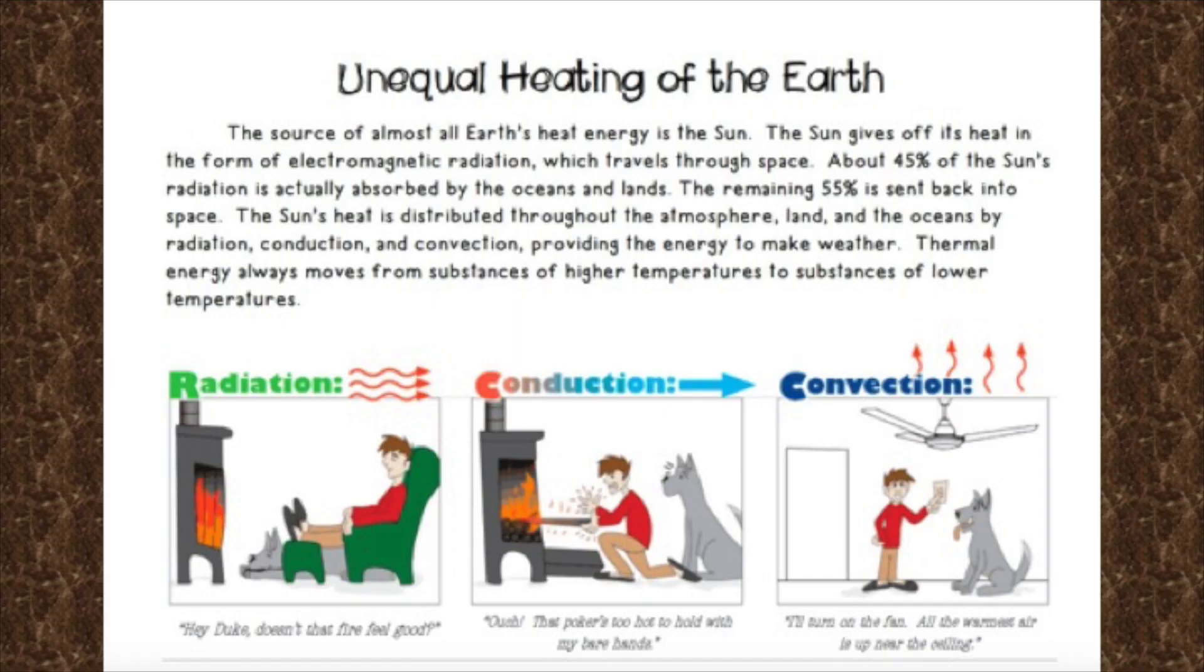So, unequal heating of the Earth. The source of almost all Earth's heat energy is the sun. The sun gives off its heat in the form of electromagnetic radiation, which travels through space. About 45% of the sun's radiation is actually absorbed by the oceans and lands. The remaining 55% is sent back into space. The sun's heat is distributed throughout the atmosphere, land, and the oceans by radiation, conduction, and convection, providing energy to make weather.